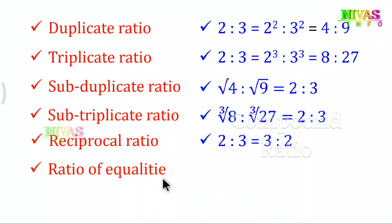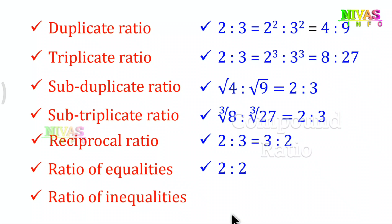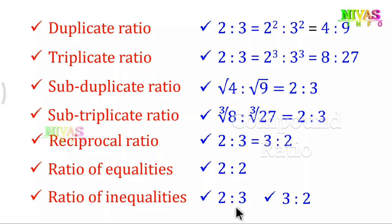Next, ratio of equalities: this is when both terms are equal, for example 2 is to 2. Next, ratio of inequalities: for example, 2 is to 3 or 3 is to 2, where the terms are unequal. The duplicate ratio of 2 is to 3 is 4 is to 9.